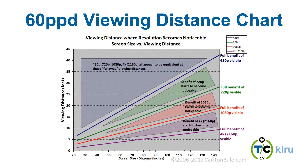It's a viewing distance chart — everybody loves these. This is a 60 pixels-per-degree viewing distance chart. It's based on the same science behind the eye chart at your eye doctor. A person with 20/20 vision can resolve about 60 pixels per degree, which is a measurement that takes into account both distance and resolution. Based on that measurement of the human eye, this chart shows where the differences between video resolutions become noticeable. If you line up the nine-foot mark, you get into fairly big TV sizes pretty quick when going to 4K.